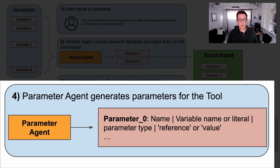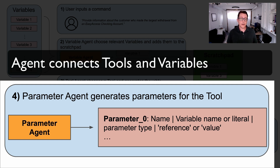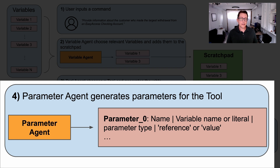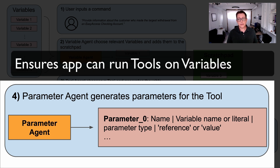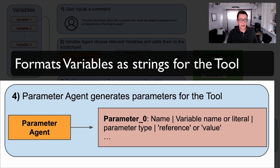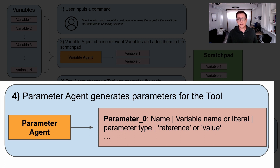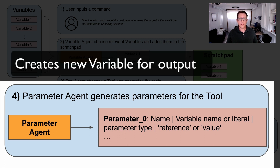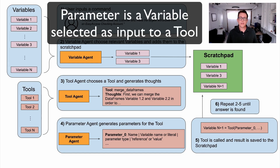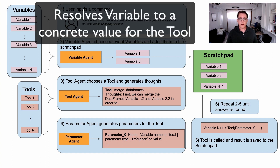Once we have the correct tool, then we use a parameter agent to connect the selected tools and variables. This is a technical setup step that ensures that the application can successfully run the tools on the variables. This agent, which is just an LLM, formats the variables as strings that the tool can interpret, and it creates a new variable to store the output of the tool. A parameter is just a variable that has been selected as input to a tool — it resolves the variable into a concrete value that a tool can operate on.